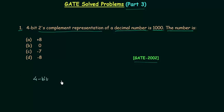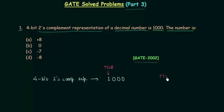The 4-bit 2's complement representation is 1 0 0 0. We can see MSB is equal to 1. In 2's complement representation, if the most significant bit is equal to 1, this implies the number is negative. If MSB is equal to 0, this implies the number is positive.